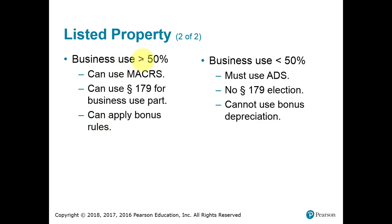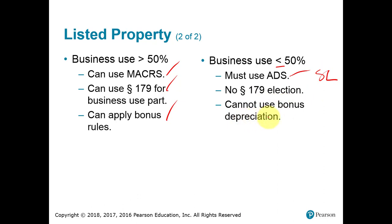The cutoff is more than 50% business use to qualify for the regular MACRS rules. That business portion will use MACRS and may be eligible for Section 179 and bonus depreciation. If business use is equal to or less than 50%, the business portion must use the longer life with straight-line — no Section 179 and no bonus depreciation are allowed for that business use portion.